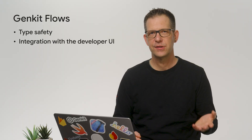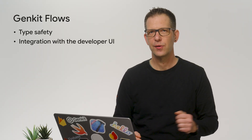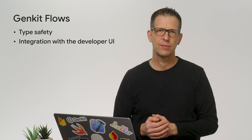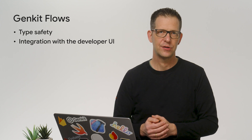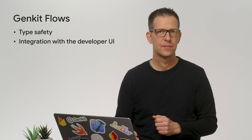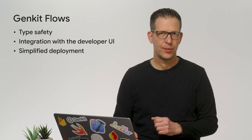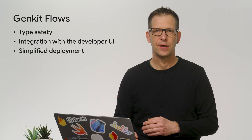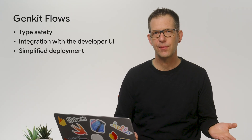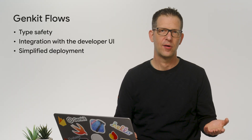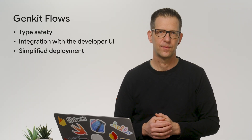Flows also integrate well with GENKIT's developer UI, giving you a user-friendly and efficient way to interact with your AI features during development. GENKIT flows can also be deployed as web API endpoints — for example, using Cloud Functions for Firebase, Cloud Run, or any other platform that can host Node.js apps. Let's convert one of the previous code snippets to a GENKIT flow. You define GENKIT flows using the defineFlow function.